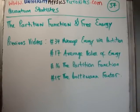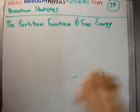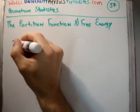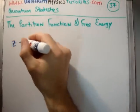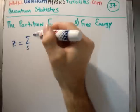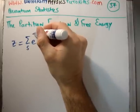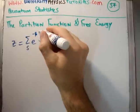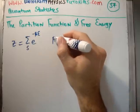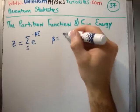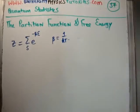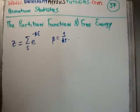So what revision do we need to do for this? First of all, we call Z the partition function. The partition function is the sum of Boltzmann factors: e to the minus beta epsilon, where beta is the thermodynamic beta, 1 over kT. Each of these e to the minus beta epsilon is called a Boltzmann factor.